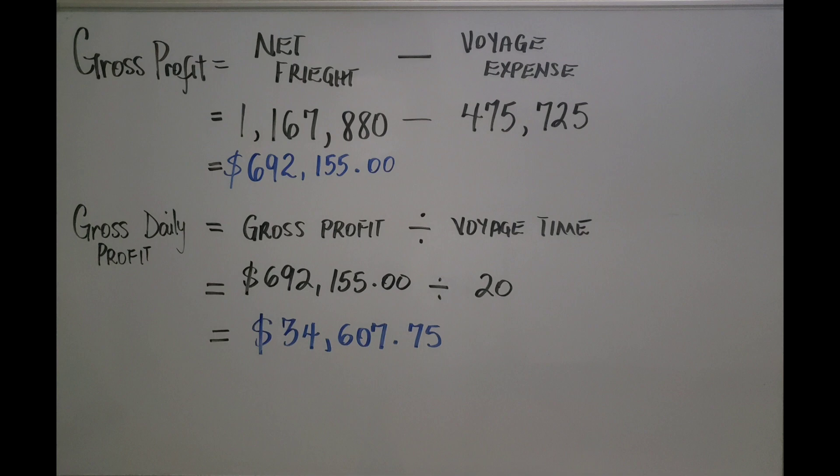Now for the gross daily profit: the formula is gross profit divided by voyage time. So $692,155 ÷ 20 days = $34,607.75 gross daily profit.